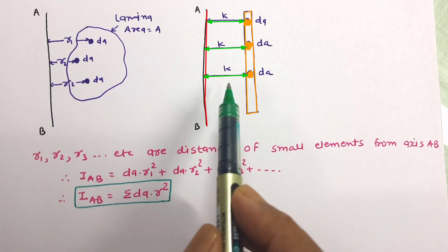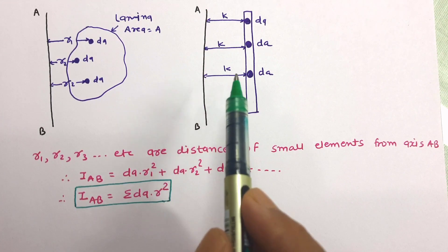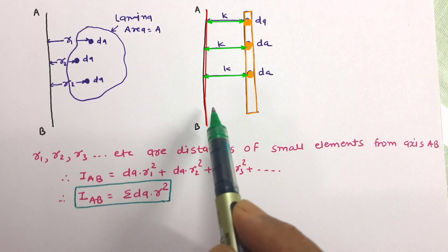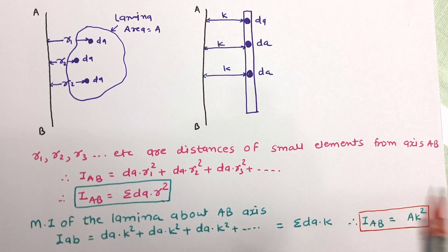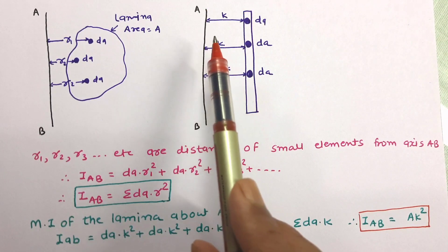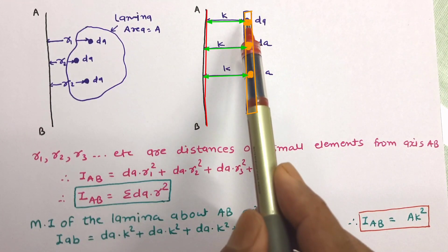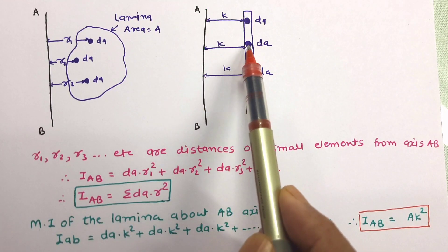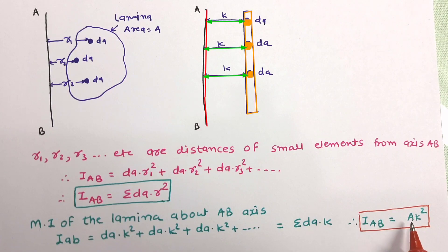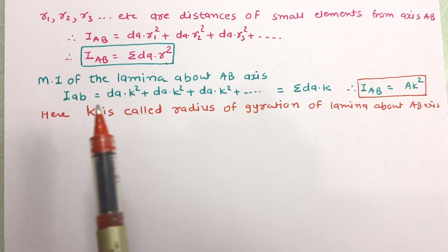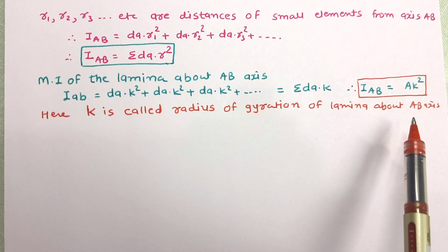So now in the second position, each small elemental area is at a constant distance K from the reference axis AB. So now the moment of inertia of the lamina about AB axis will be equal to DA into K square plus DA into K square. So it will be summation of DA into K square. Now we know that summation of DA is the total area A. So I_AB will be equal to A times K square.